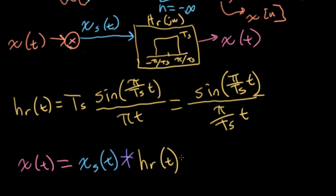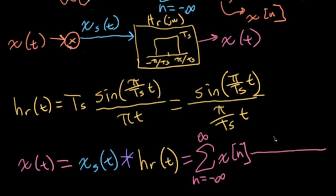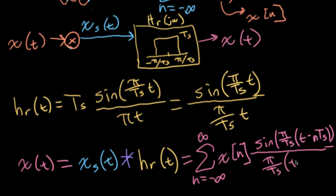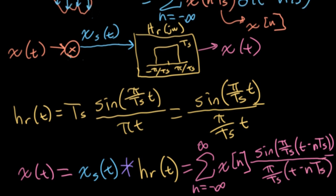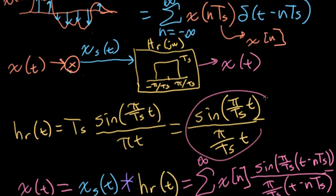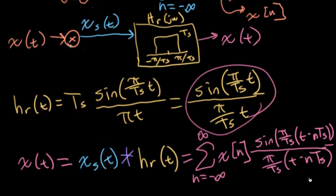We'll basically be taking this impulse response and shifting it to land at each of these sample points. So with that in mind, we can write this as a sum of x of n — those are a set of weights — times sine of π over TS times the quantity t minus n capital TS, all over π over TS times the quantity t minus n capital TS, because each of these sinc functions has been shifted to land at nTS as it runs through the sum.